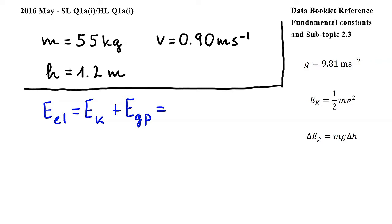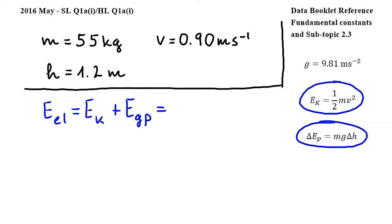Next, we will use these two equations from subtopic 2.3 to express the kinetic and the gravitational potential energy. Here, EK is kinetic energy, M is mass, V is speed, EP is gravitational potential energy, G is the acceleration of free fall, and H is height. So, using these two equations, we get 1.5 MV squared plus MGH.